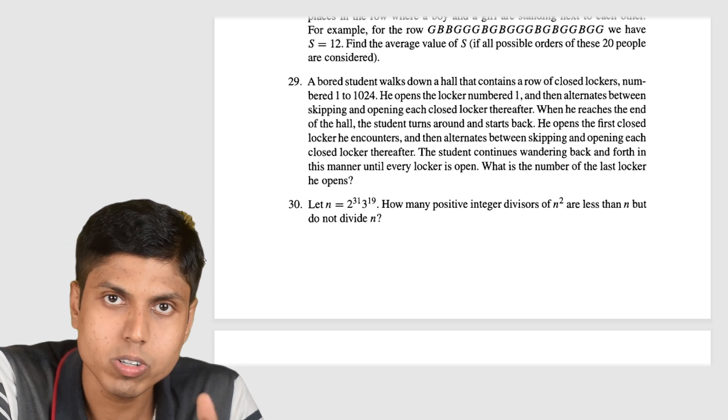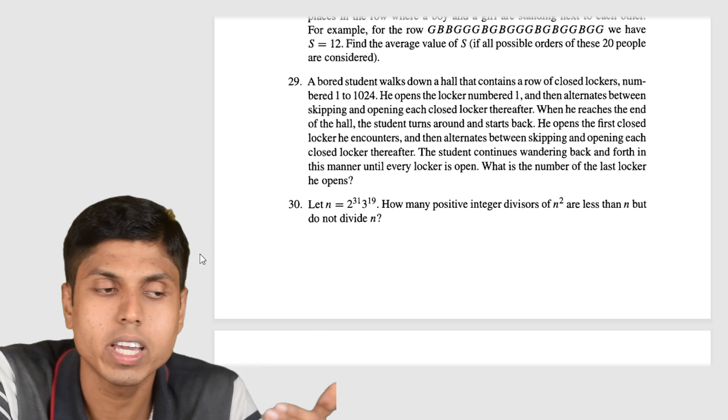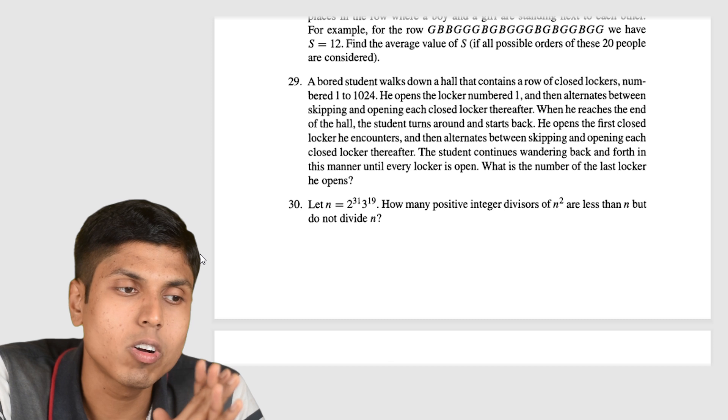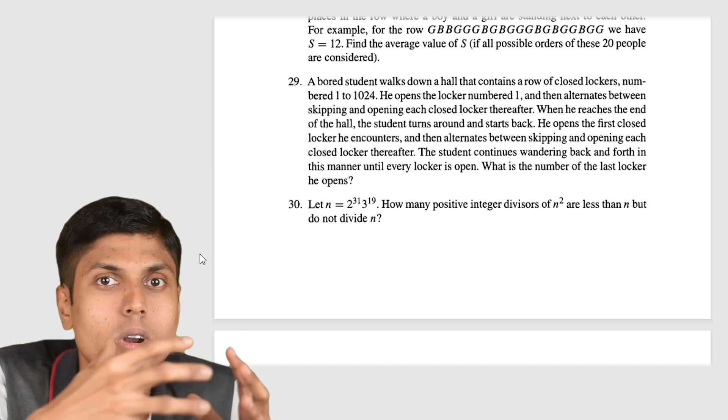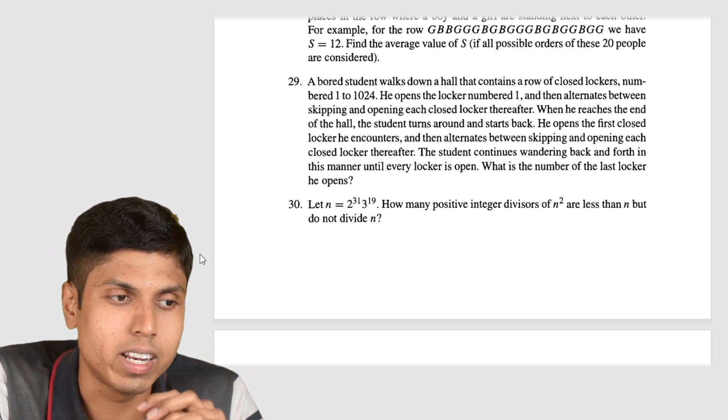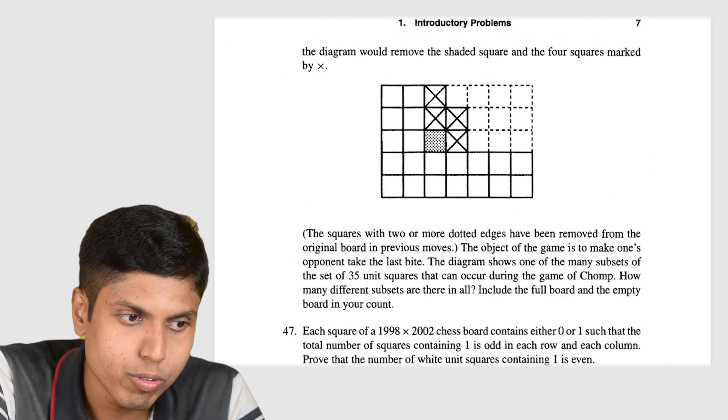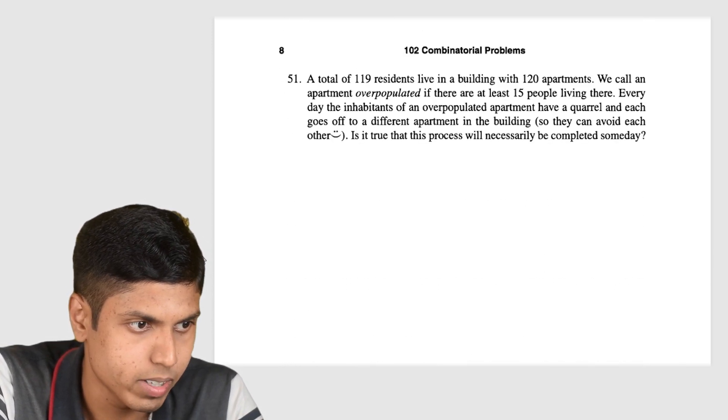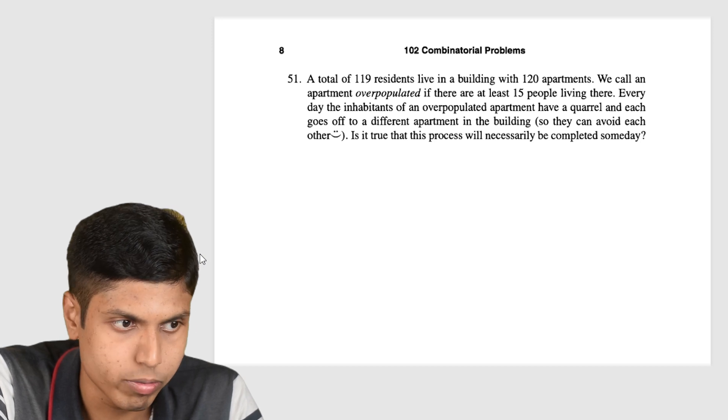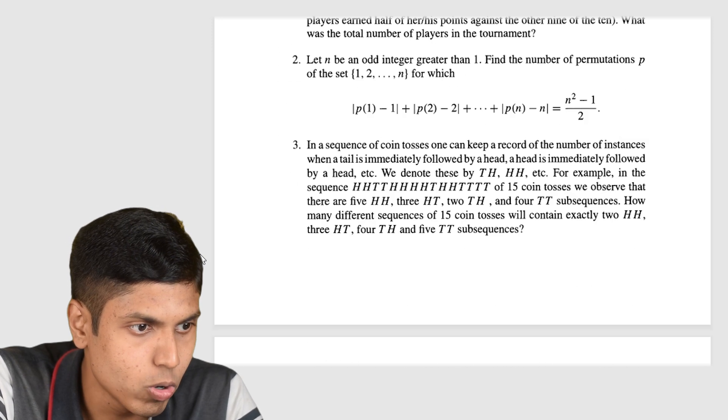So as I mentioned, these problems are not only for Olympiad aspirants. They can also be explored by combinatorial thinkers like who love combinatorics in their day-to-day life. So in the exam point of view, of course, this is helpful for Olympiads. So you have 51 problems and then you go with the advanced.